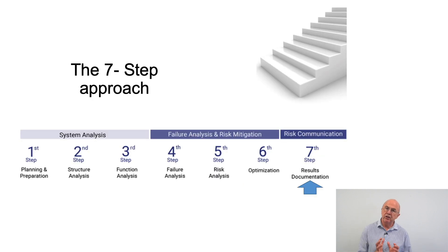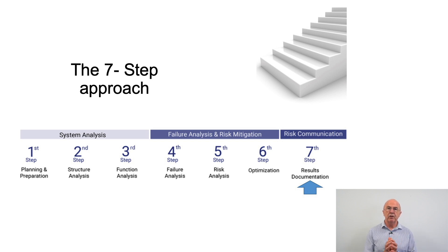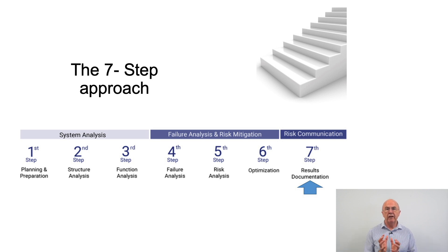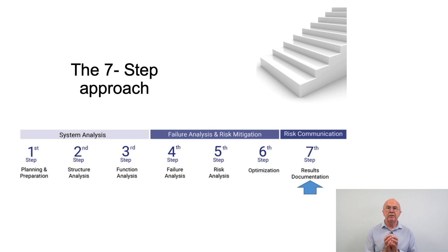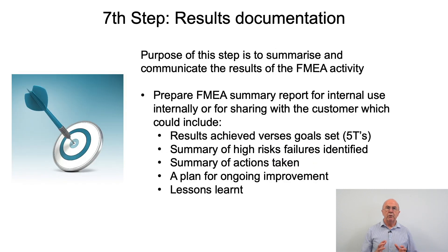Now we've got to step 7. Let's sit back for one minute and think about this seven-step approach and what it is trying to achieve. Steps 1, 2, and 3 are about analysing the system. Steps 4, 5, and 6 are about failure analysis and risk mitigation. Step 7 is still very, very important because this is now about risk communication — results documentation.